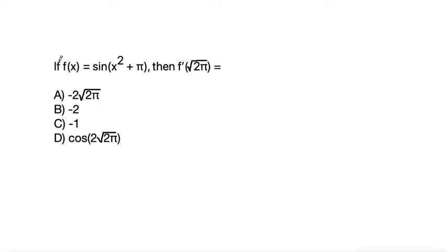So here we have a problem that says if f of x is equal to sine of x squared plus pi, then f prime of the square root of 2 pi is equal to what?